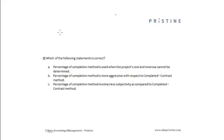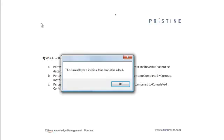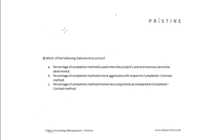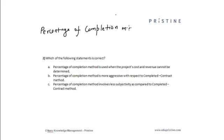There are two kinds of methods used to evaluate a long-term contract: one is the percentage of completion method and the second is the completed contract method.